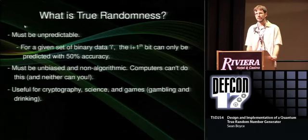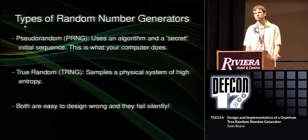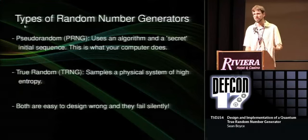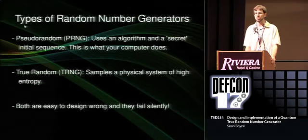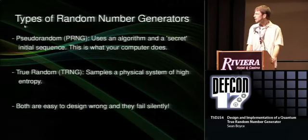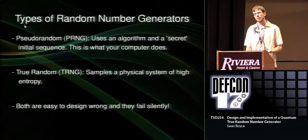These numbers are useful for cryptography, scientific applications, and drinking games. If you wanted random numbers, you have two basic approaches. You can use a pseudo-random number generator, which uses an initial secret starting condition and an algorithm to generate a deterministic sequence of numbers — considered a good enough approximation for many purposes. Or you can use a true random number generator, which samples random numbers by taking a chaotic physical system, measuring variation in that system, and using that to generate the numbers.